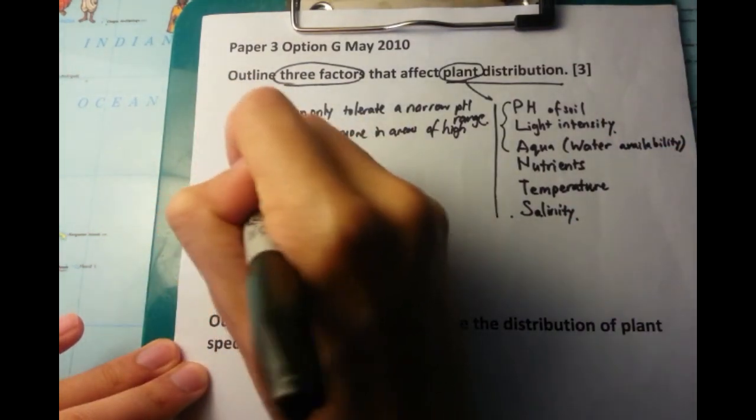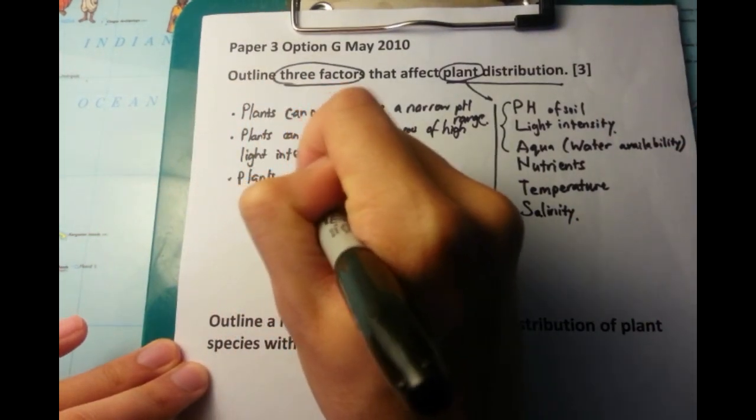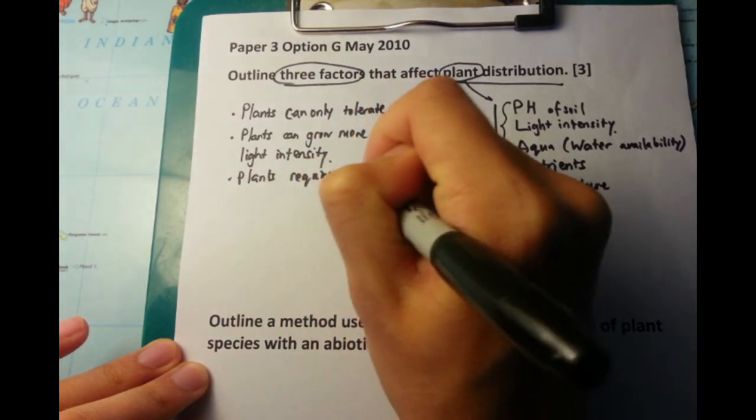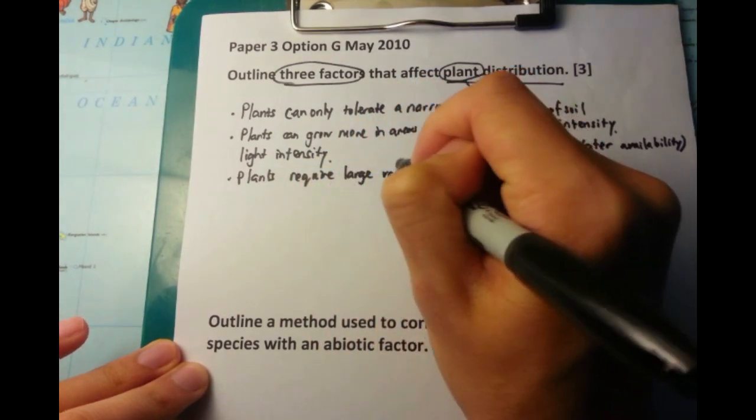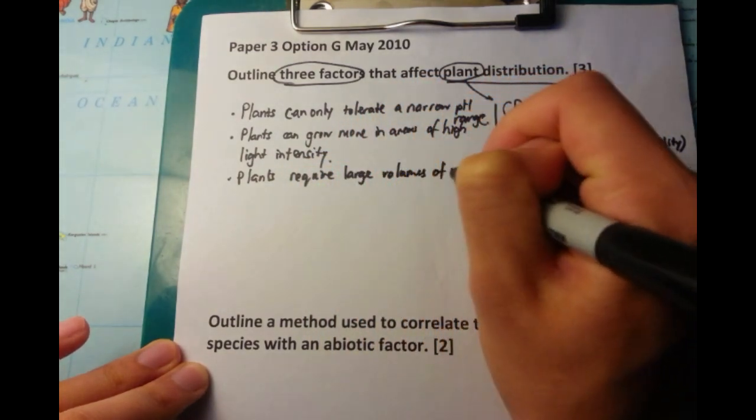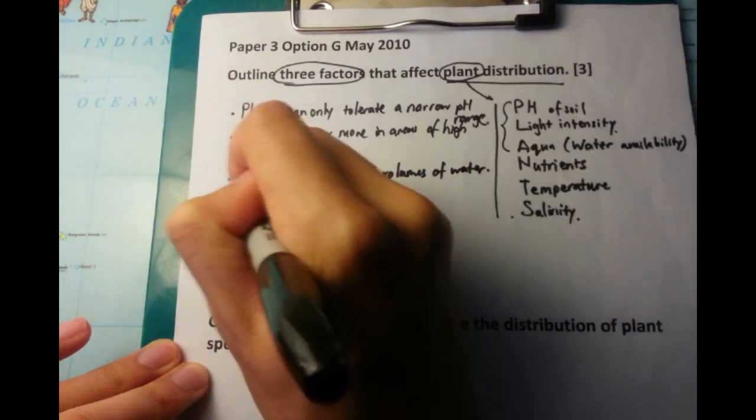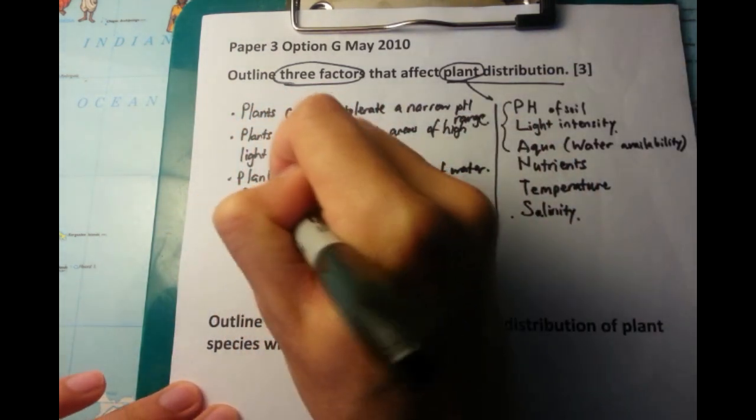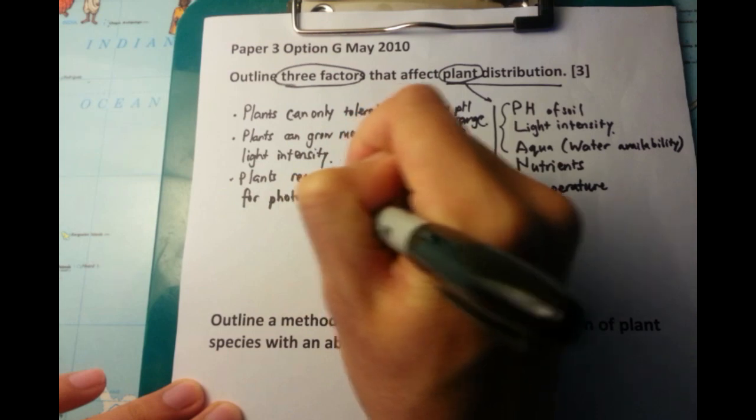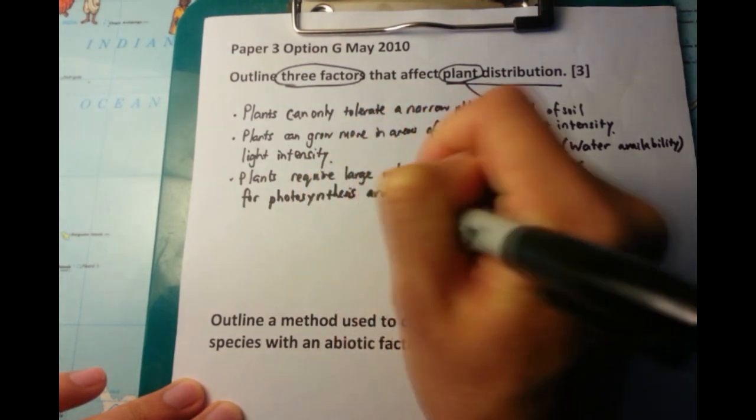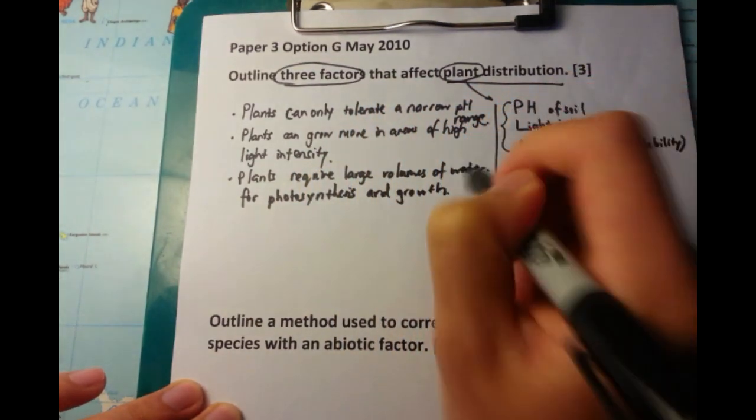Very similarly to that is water availability. In general, plants prefer areas which have more water as opposed to areas which have less water, and this is because of photosynthesis as well as growth and other things. So those are the three points you get for that particular question.